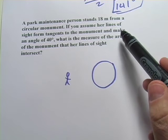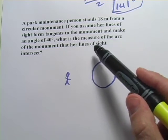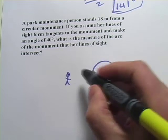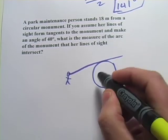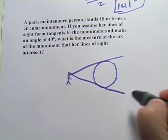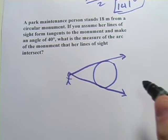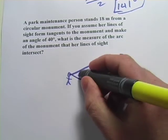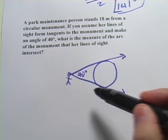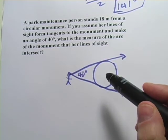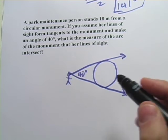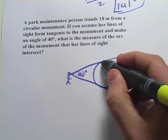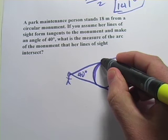It says if you assume her lines of sight form tangents. So lines of sight, she's looking at this thing and she's looking at one edge over here and she's looking at the other edge over here. So those are tangents and make an angle of 40 degrees. So right in here between her lines of sight is a 40 degree angle. What's the measure of the arc of the monument that her lines of sight intersect? So it would be this arc right in here.